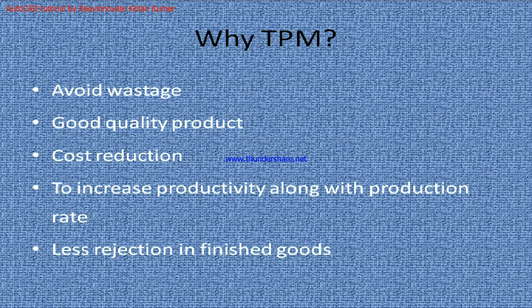Why do we need TPM? We want to reduce wastage, we want good quality products, and we want to reduce cost to increase productivity along with production. We want to increase production, but our productivity should not go down. For example, if I am making 100 products with 3 manpower in 1 hour, and I reduce the time by half but increase the manpower, it will ultimately give me nothing. So we need to take care of both productivity and production rate, and less rejection in finished goods.